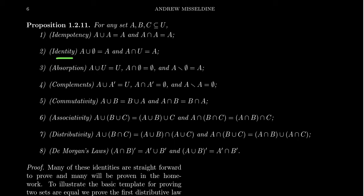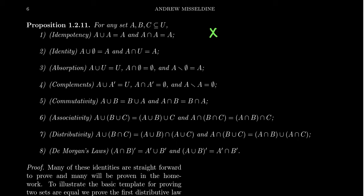Property 2 is called the identity property — there are identities for these operations. With integers, x plus 0 always equals x, and 1 times x always equals x, so we have identity elements for addition and multiplication. It turns out unions and intersections also have identities. A union the empty set always gives back A — it doesn't change the set. And A intersect U, where U is our universe, always gives back A, because everything in A is inside the universe. These are properties we see mirrored in the usual number systems.